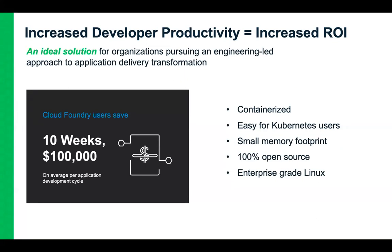Organizations can now deliver more apps in less time. More than a third of users save a few months or more per development cycle; 10% report saving more than six months. Nearly a quarter report saving $500,000 per application development cycle. On average, they reported savings of 10 weeks of time and $100,000 per development cycle — meaning an app-a-year company can transform into an app-a-week company. That's why SUSE Cloud Application Platform uses Cloud Foundry: it's a certified distribution that is containerized and very easy for Kubernetes users to get started with.